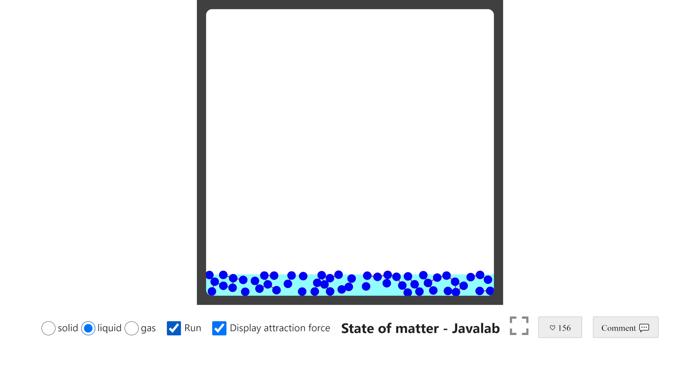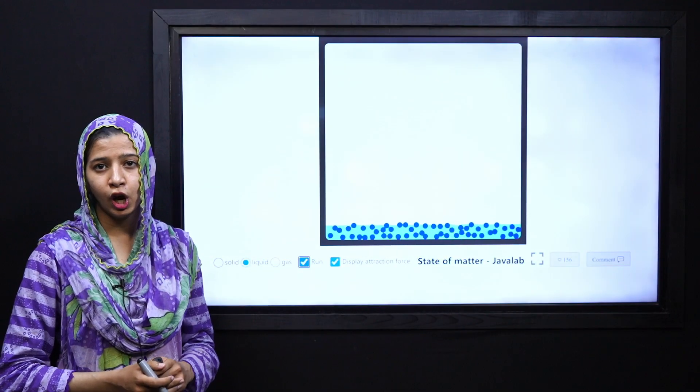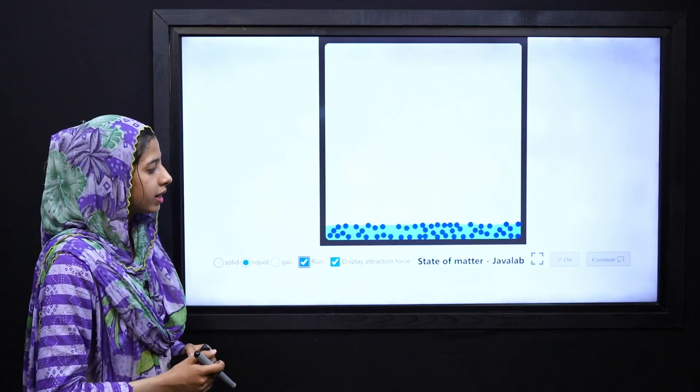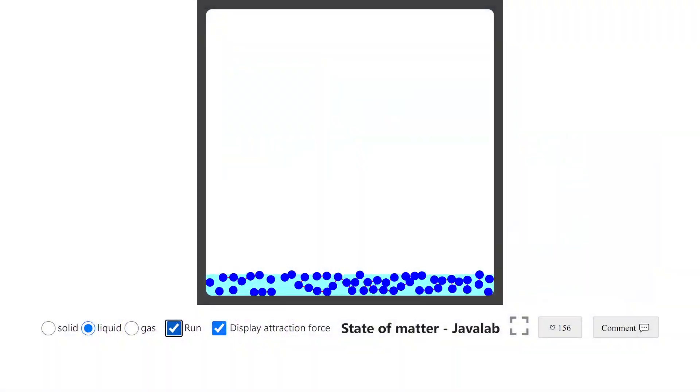But these forces of attraction are responsible for definite volume. However, in random motion they don't keep definite shape. And if we exert high pressure, they can be compressed. So we can say that liquids are low or moderately compressible because they are in between solid and gases.